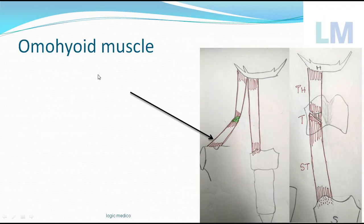Coming to the omohyoid muscle, it has got two bellies as already mentioned: the inferior belly of omohyoid and there is an intermediate tendon, and this is the superior belly of omohyoid. So these are the two bellies of omohyoid.